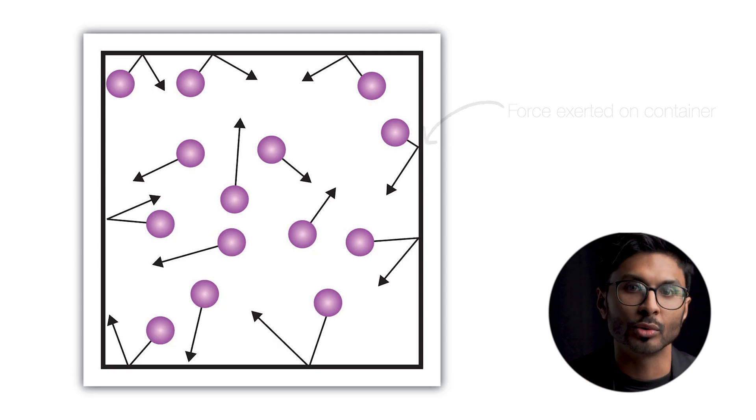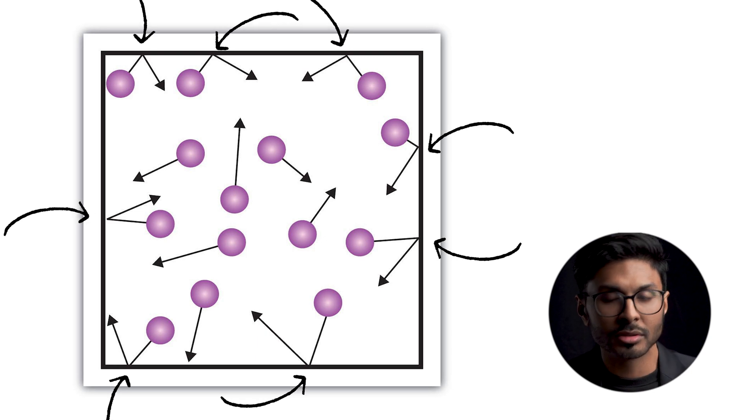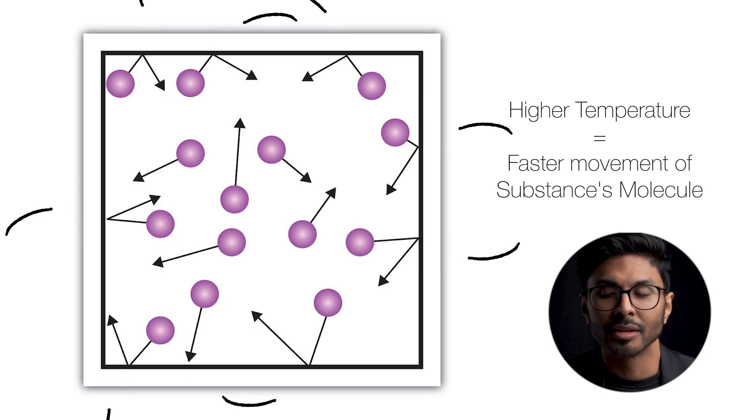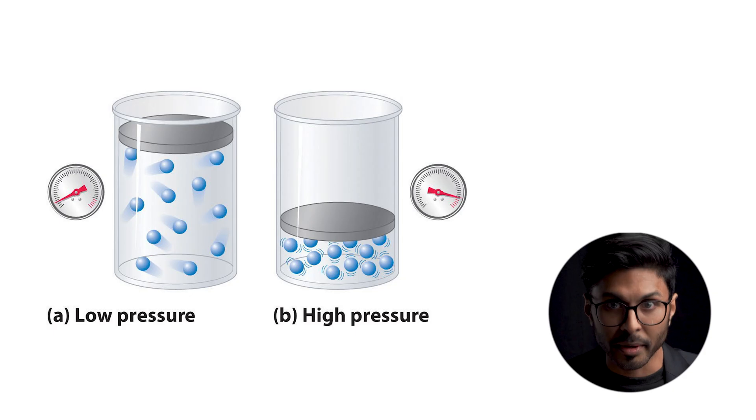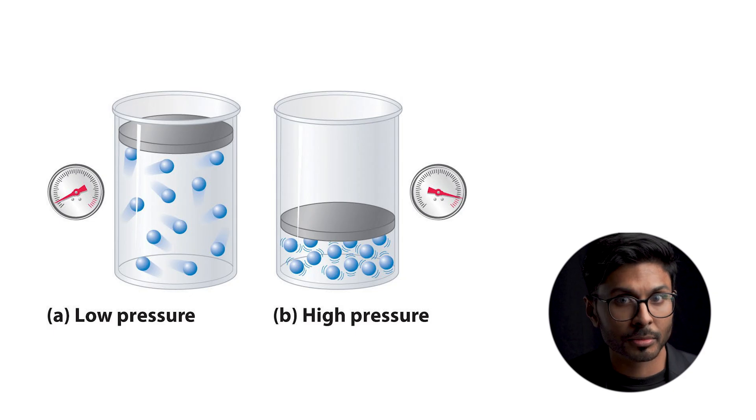Imagine balls bouncing inside a box — each collision exerts a small force from the inside to the outside, and the combined effect of all collisions creates the pressure we measure. More molecules or faster movement at higher temperatures means more collisions, which increases pressure. A smaller volume increases the frequency of collisions, also raising pressure. Imagine a gas in a balloon — if the gas is hotter, the balloon is more likely to shake and pop. If you squeeze the balloon, you can feel the pressure increase in your hand.